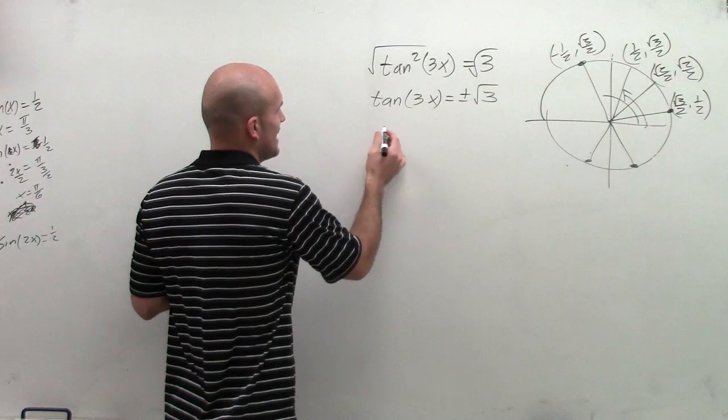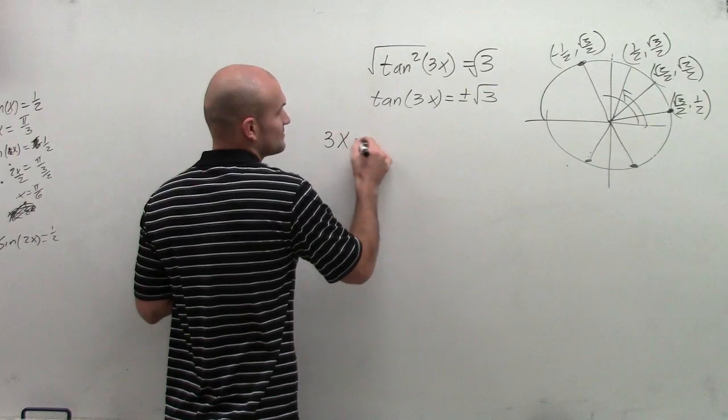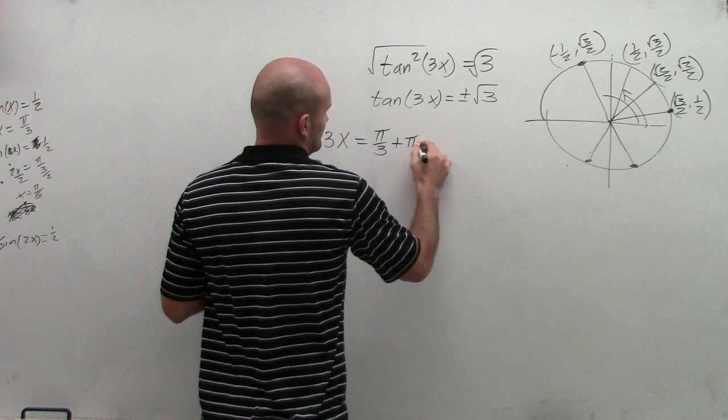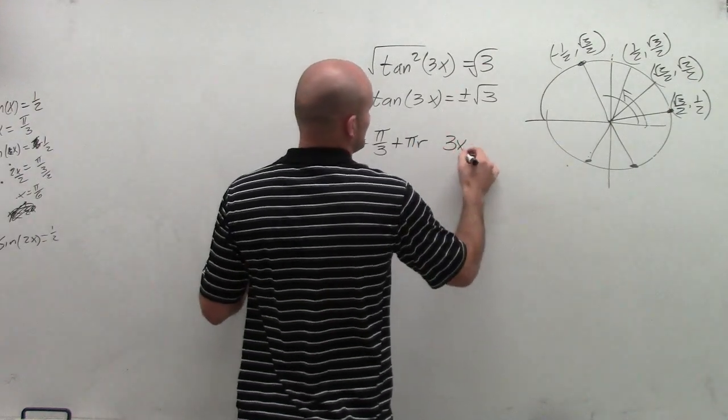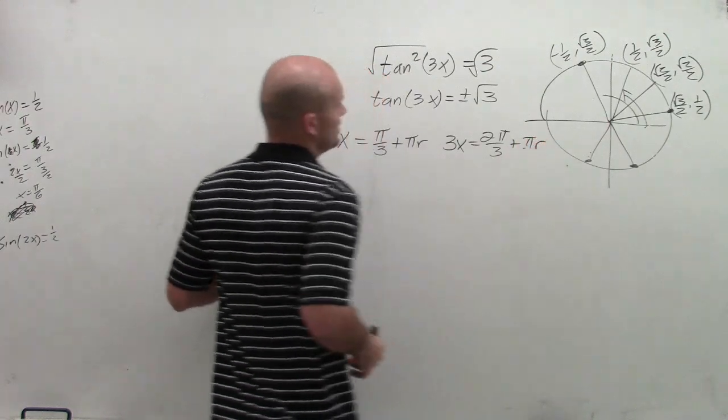So, so far, what we have is rather than saying now x equals this, we could say when 3x equals pi over 3 plus pi r. And then we have 3x equals 2 pi over 3 plus pi r.